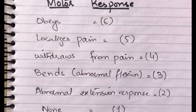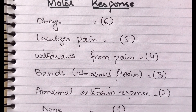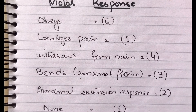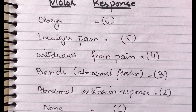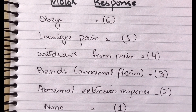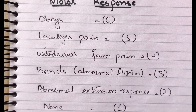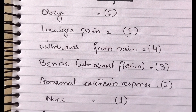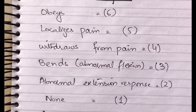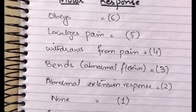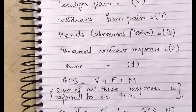If the patient shows only abnormal flexion, that is a score of 3. Abnormal extension is a score of 2. And no response at all is a score of 1.